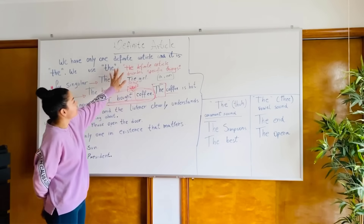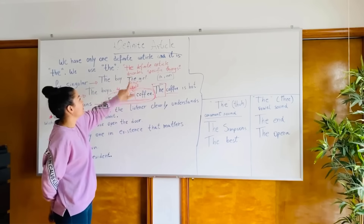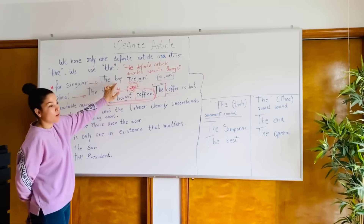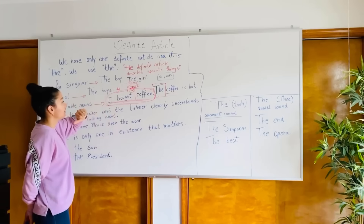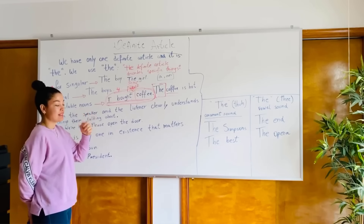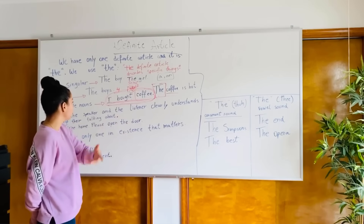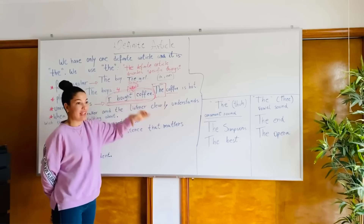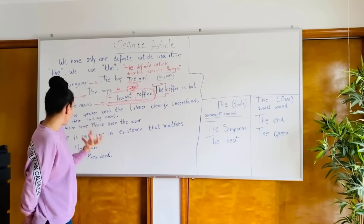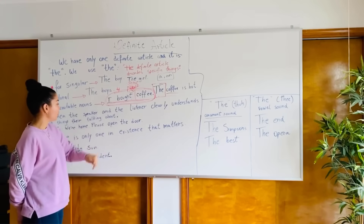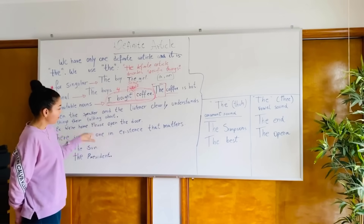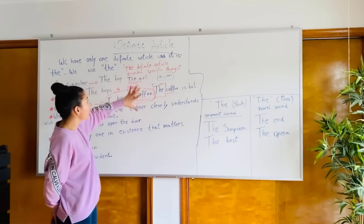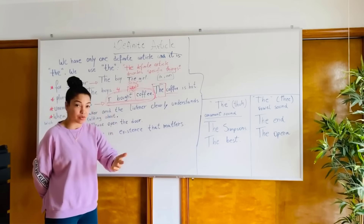One very interesting thing I put up here in red: 'The definite article describes specific things.' So when I say 'the boy,' I specify that boy — that specific boy, right there. 'The coffee' — I already talked about this coffee. 'The coffee' — this specific coffee. It is specific. I am describing something I know. 'Please open the door' — we both know which door. 'The sun' — there is only one. It is specific. So it is very simple.